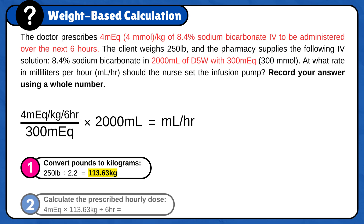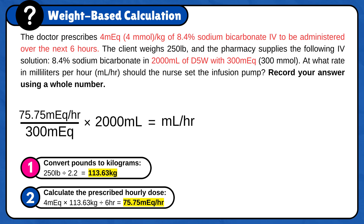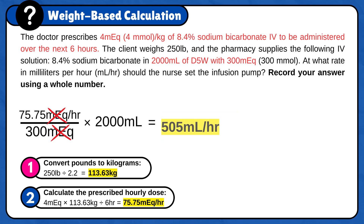Now calculate the prescribed hourly dose: 4 milliequivalent times 113.63 kilograms divided by 6 hours is 75.75 milliequivalent per hour. Now plug the answer into the formula: 75.75 milliequivalent per hour divided by 300 milliequivalent times 2000 milliliters. Milliequivalent cancels out and the answer is 505.05 milliliters per hour. Round to a whole number — since the tenth digit is between 0 and 4, round down. The final answer is 505 milliliters per hour.